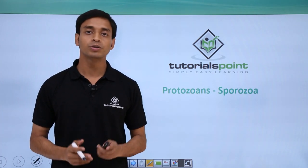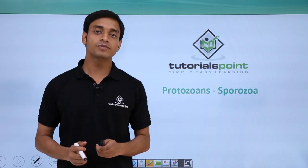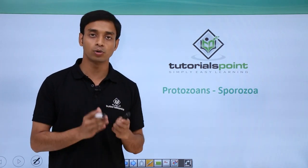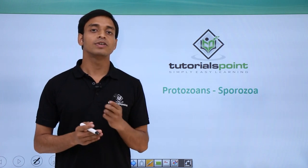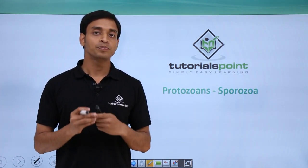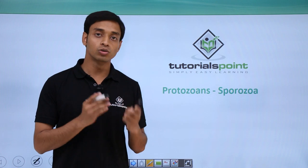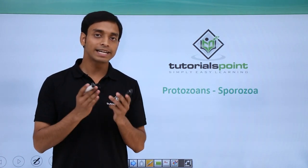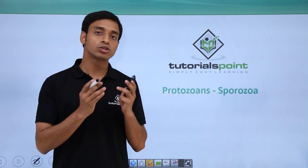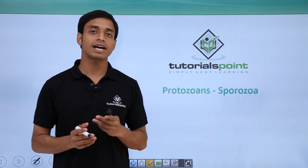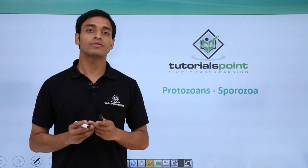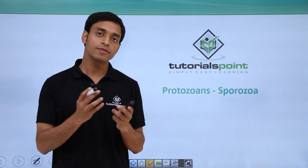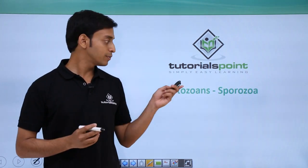Welcome to Tutorials Point. In this video we are going to talk about the fourth group of protozoans, known as Sporozoa. Before this, we have talked about the other three groups: first, the zoo flagellates which have flagella as the locomotory organ; second, the sarcodina which has pseudopodia or false feet as the locomotory organ; and third, the ciliata which has cilia as a locomotory and food-collecting organ.